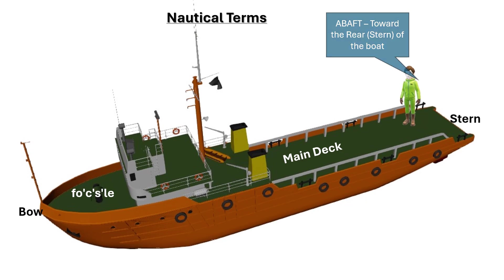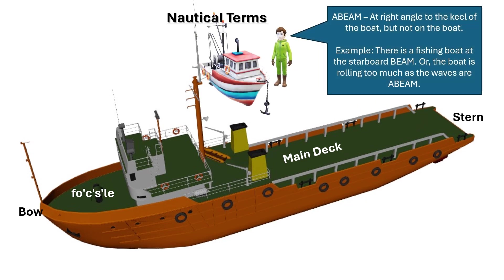Abeam is used to describe something at or coming from a right angle of the vessel. For example: there is a fishing boat at starboard beam, or the vessel is rolling because the waves are abeam.